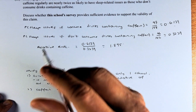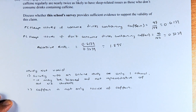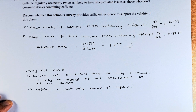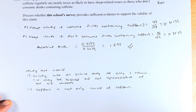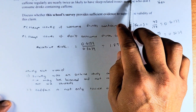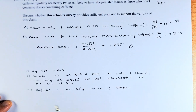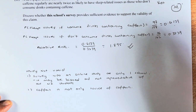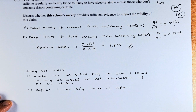So, does the newspaper article's claim hold — that people who consume drinks containing caffeine are twice as likely to have sleep issues? I think it is true because 1.895 is quite close to 2, so yes. If you can calculate the relative risk and support this claim, that is an excellence answer.